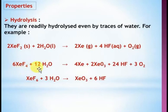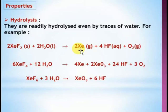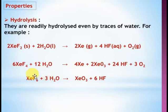Xenon tetrafluoride also reacts with water, but here xenon difluoride also comes along with xenon, along with hydrogen fluoride. If you take only water to react with xenon difluoride, it never produces xenon trioxide — it only gives xenon. If you take xenon hexafluoride with three moles of water, it gives xenon trioxide and hydrogen fluoride. With 12 water molecules, xenon hexafluoride gives xenon trioxide and xenon.